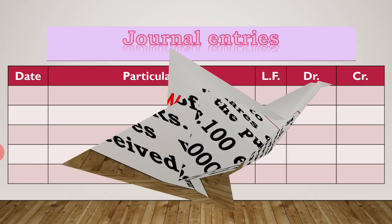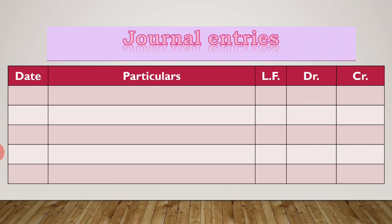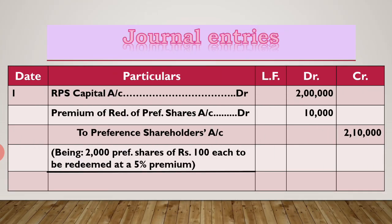Now first draw a journal entries table: date, particular, ledger folio, debit rupees and credit rupees. Now the first entry: here the preference shares are fully paid up, so we do not write the partly paid up entry, but we directly pass the preference shares redeemed entry. RPS capital account debit 2 lakh — 2 lakh because 2,000 into 100 rupees. Premium on redemption of preference shares account debit 10,000 — because 5% premium on 2 lakh is 10,000. To preference shareholders account 2,10,000.